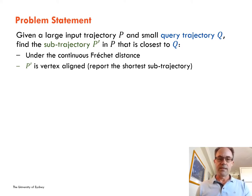In our setting, there can be many exact closest sub-trajectory results, and so we report the one that cannot be shortened in length and still be the closest result.